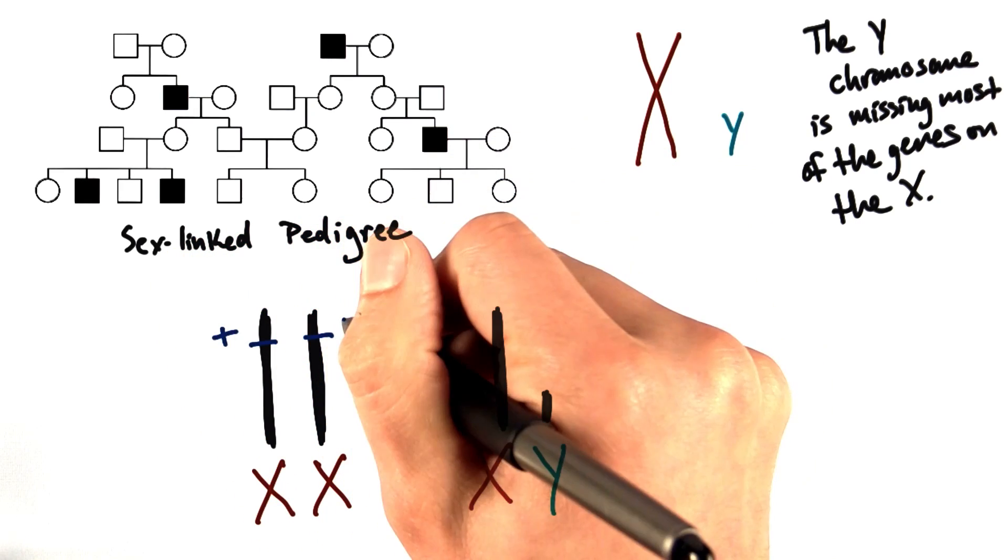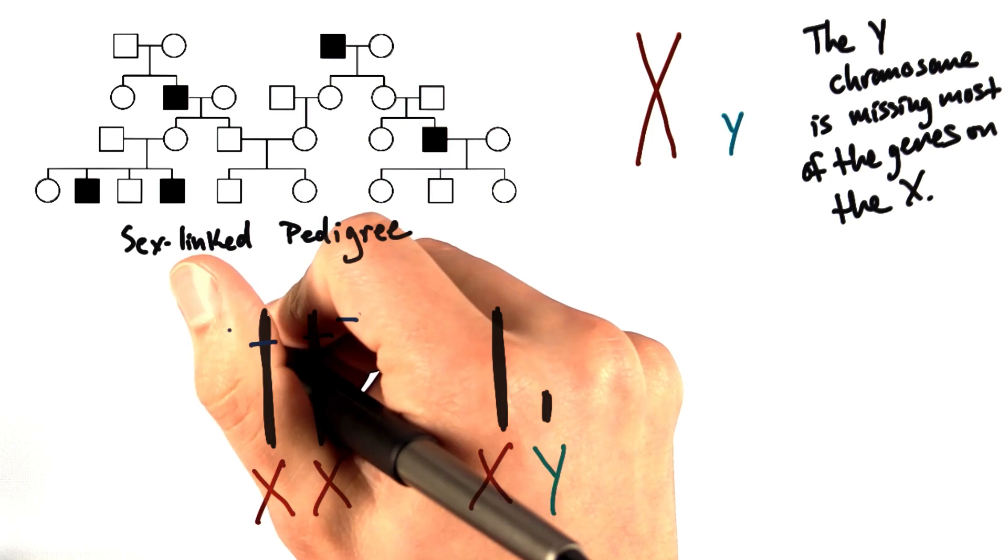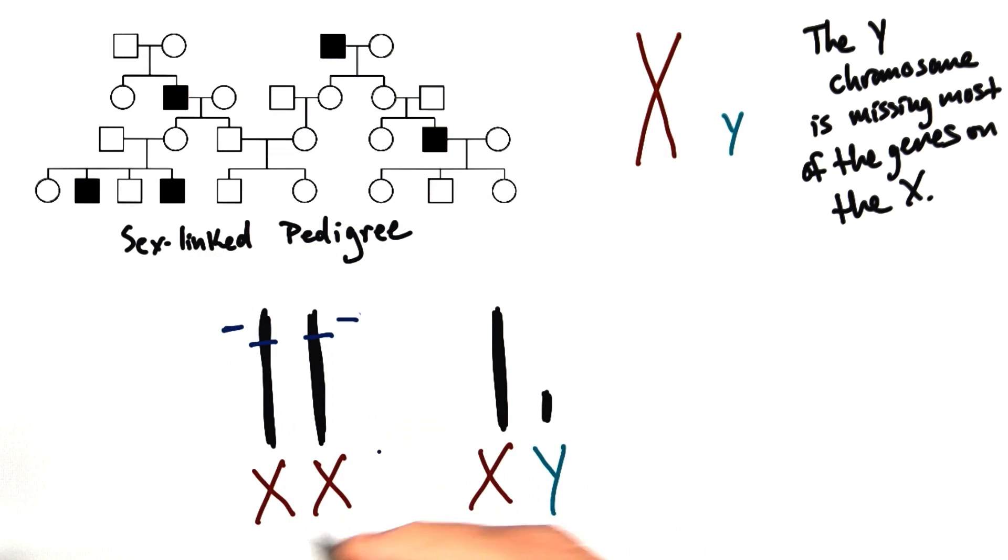They can be plus plus, plus minus, or minus minus. And for recessive traits, when they're homozygous recessive, then they're going to show the trait, let's say for red-green colorblindness.